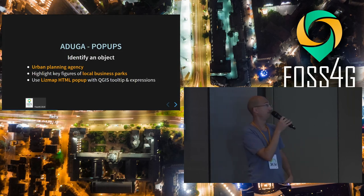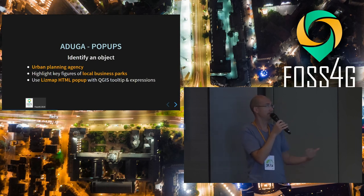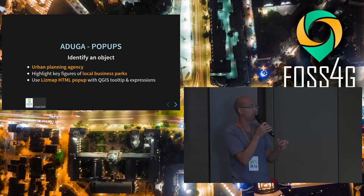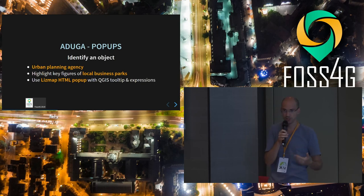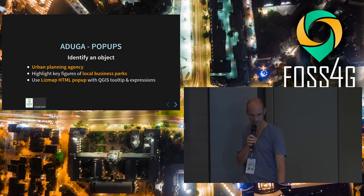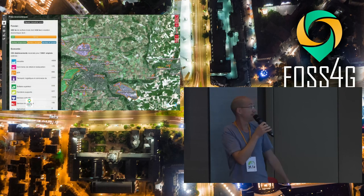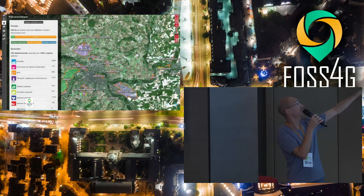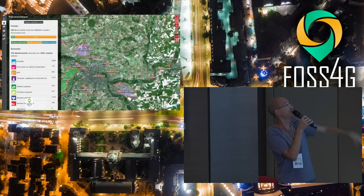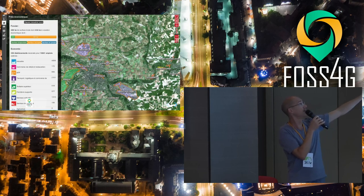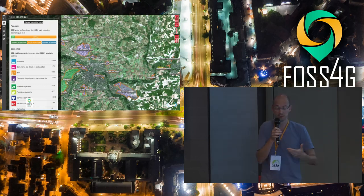Aduga is an urban planning agency. They have more business data, like business parks, and they wanted to highlight key figures. They use LizMap possibilities — for example, HTML pop-ups with QGIS expressions and complex syntax. They have maps with areas and use QGIS expressions to create those representations. For example, if you have no transport, areas will be shown in grey, and you have a small slider with percentages that depends on the QGIS data.